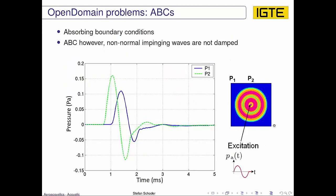These issues will be addressed by the next method, the PML. So for the ABC, impinging in very normal direction, the reflections are not so large.